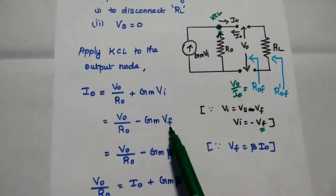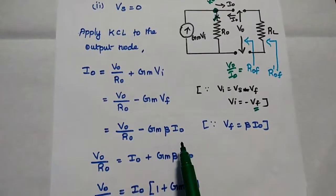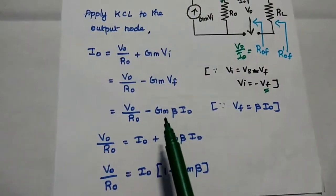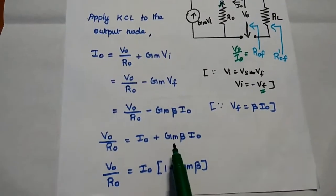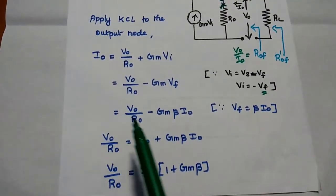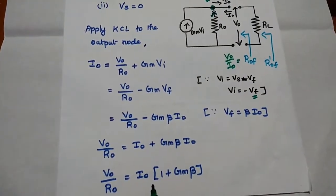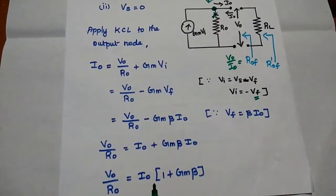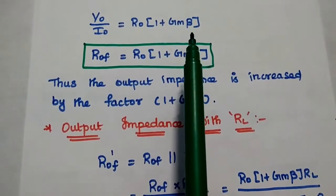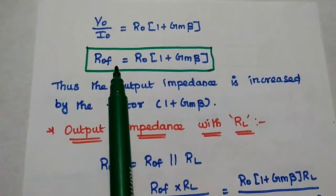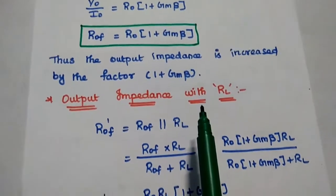We replace VI with minus VF, getting VO by RO minus Gm VF. VF can be replaced with the value beta IO. Then we move the IO term to the other side: VO by RO is equal to IO plus Gm beta IO. Taking IO as a common term and rearranging, we get VO by IO is equal to RO into 1 plus Gm beta. This is nothing but ROF. Thus, the output impedance is increased by the factor 1 plus Gm beta.